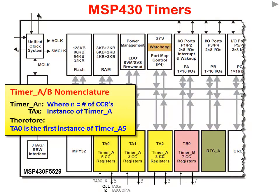The nomenclature of the Timer A and B peripherals may seem a little unusual at first. These two timers are very similar, but since they added a few features along the way, they bumped the name from Timer A to Timer B. As you can see, we have instances of both on the F5529.